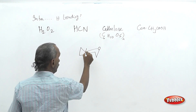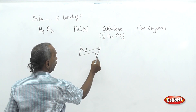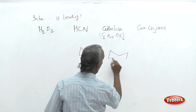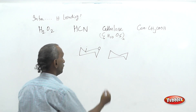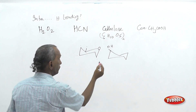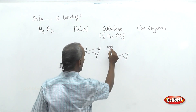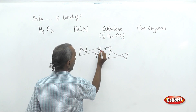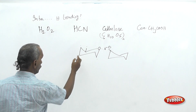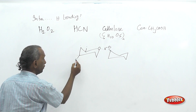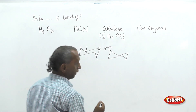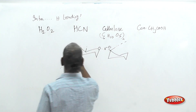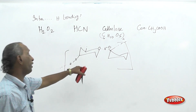Each glucose unit contains six carbon atoms. In cellulose, the hydrogen atom of one glucose unit is connected via hydrogen bonding to the oxygen atom of an adjacent glucose unit, extending throughout the polymer chain. Since glucose units are parts of the same cellulose molecule, hydrogen bonding between glucose units exists within the molecule — this is intramolecular hydrogen bonding.